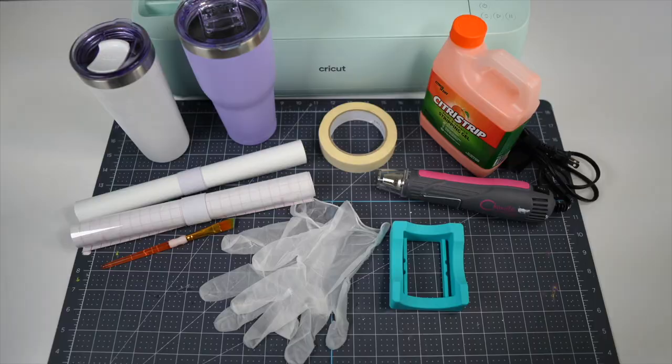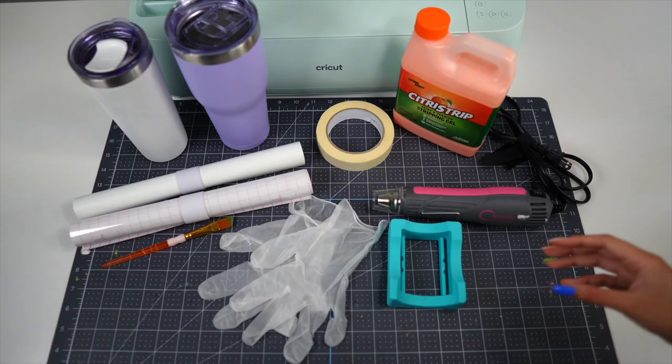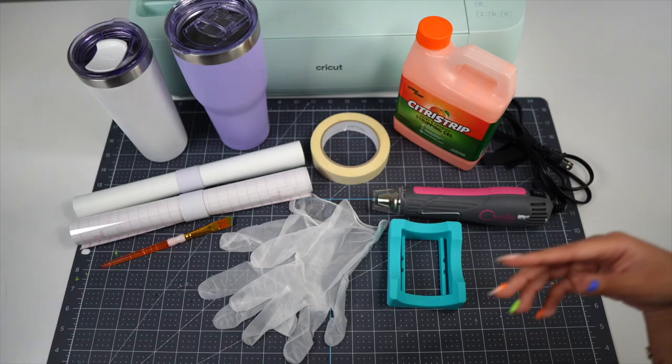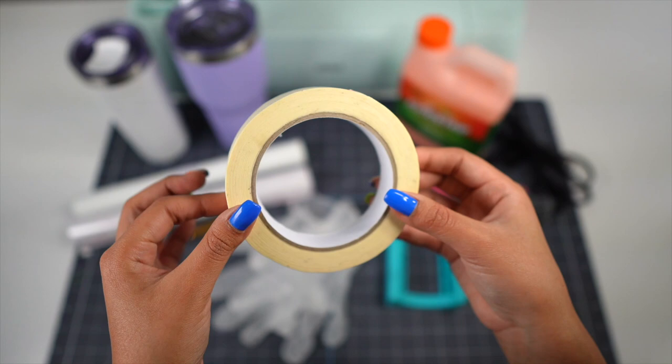The first thing you'll need are obviously some powder coated tumblers, citrus strip—you can find this product on Amazon or any home improvement store—and you will also need some painters tape. I get mine from Dollar Tree because it's very affordable and it works great.